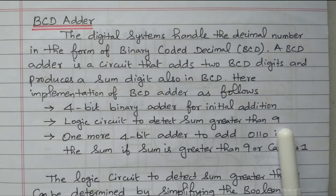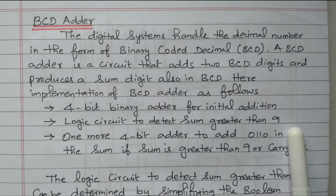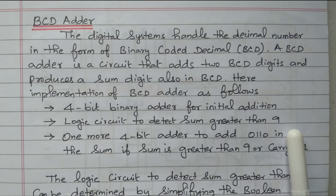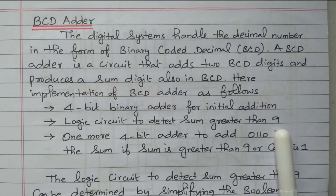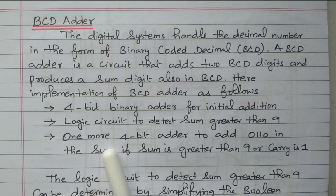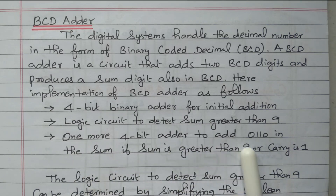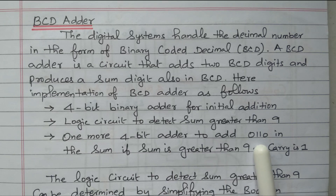For greater than nine — means 10, 11, 12 — we need two different four-digit groups. So, we need to detect whether the sum is greater than nine. Suppose if the sum is greater than nine, we need to use one more four-bit adder to add 0, 1, 1, 0 — that is nothing but six.